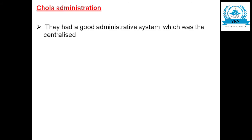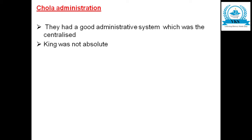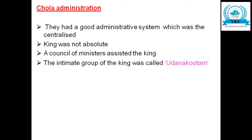Chola administration. They had a good administrative system which was centralized. The king was not absolute — he did not have absolute power; it was divided. A council of ministers assisted the king. The king had an intimate group who helped him in the administration, and this intimate group was called as Udhanakutam. The king always discussed the matters of administration with them.